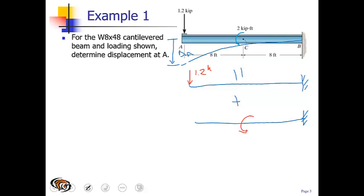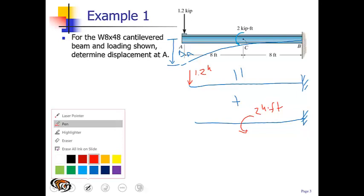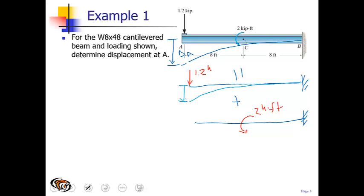The first one is pretty simple. It's just the displacement caused by the force. The second case is more complicated. We need to break this up into two portions. The first portion is going to deflect as a straight line since there's no force acting on it, and the second portion is a curve.